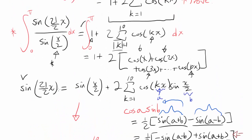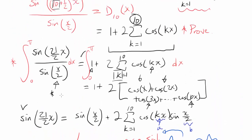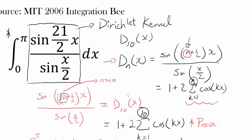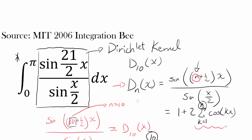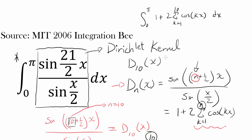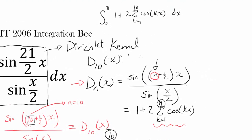So we can write the original integral from 0 to pi of sine of (21/2)x over sine of x/2 as the integral from 0 to pi of 1 plus 2 times summation from k equals 1 to 10 of cosine of kx, dx. Now let's actually integrate this.